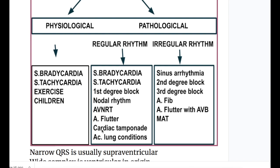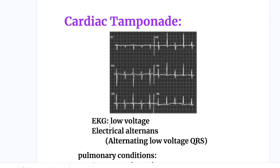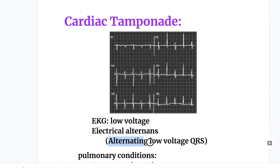Next is cardiac tamponade. In cardiac tamponade the EKG shows low voltage and electrical alternans — alternating low-voltage QRS complexes.